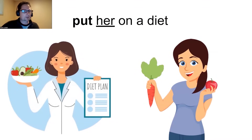Another example: her doctor put her on a diet. Again, the T is a fast D because it's between vowels — the H is silent because 'her' is not a stressed word. You can say 'put her' with a stop T, or make the T a fast D: put her. Her doctor put her on a diet because she's having surgery next week. Did her doctor put her on a diet? That's right. Her doctor put her on a diet. Why? Her doctor put her on a diet because she's having surgery next week.